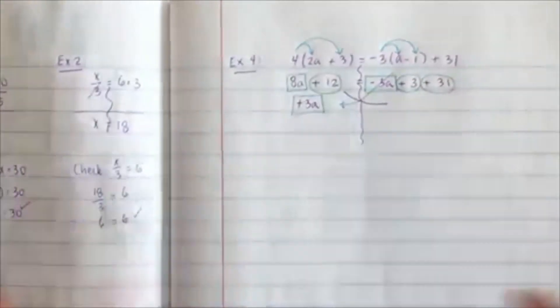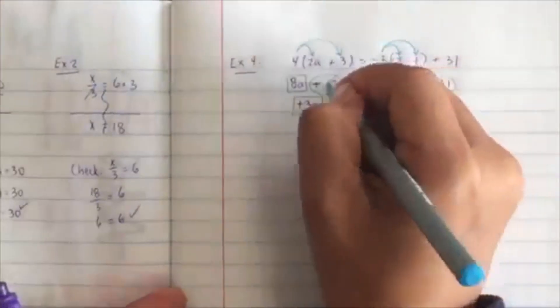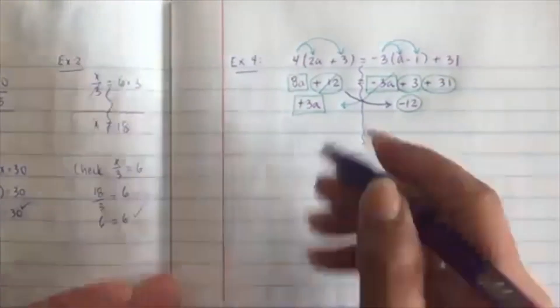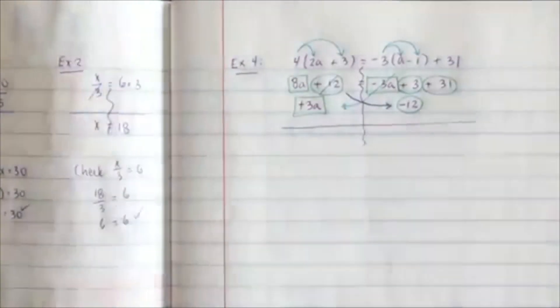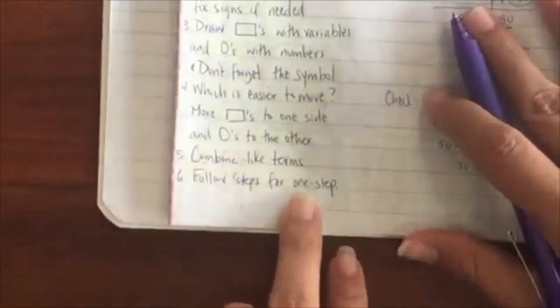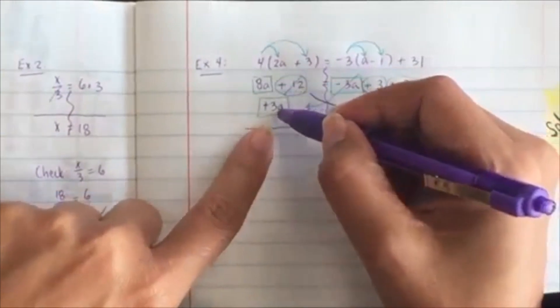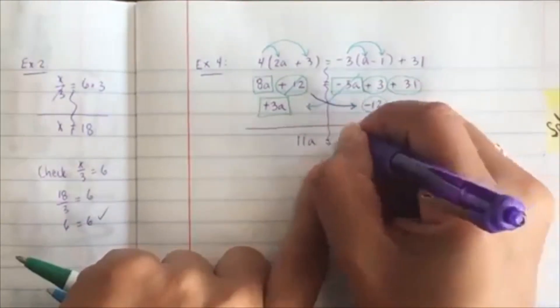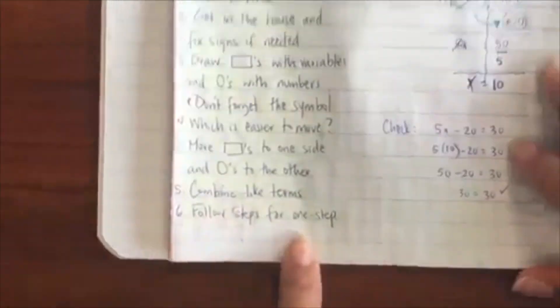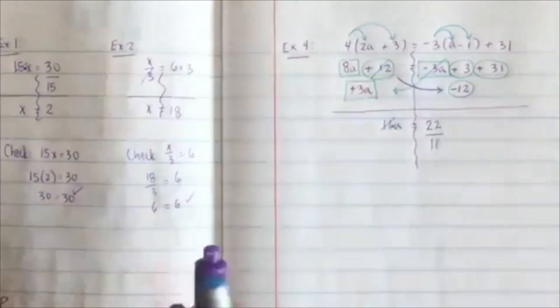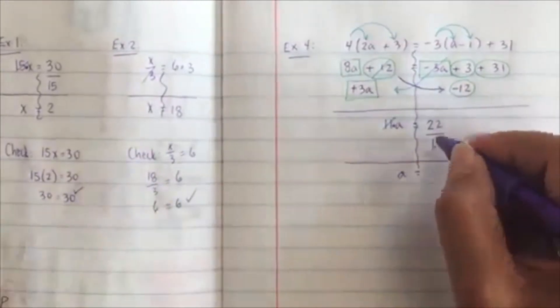Make sure you cross it out as you move it. The positive 12 is going to cross the river and change to negative 12. Alright, combine like terms: 8 plus 3 is 11, and then 3 minus 12 plus 31 is 22. So now we have a one-step equation — what do I have? Multiplication. We're going to cross the river; multiplication will become division. So you're going to have a is equal to 2.